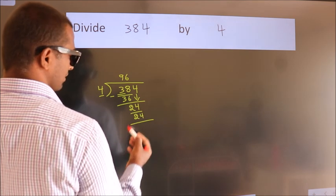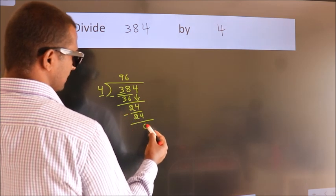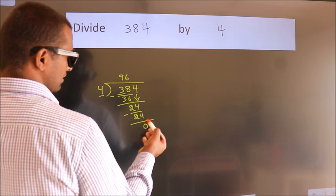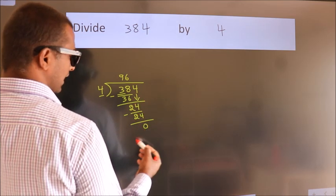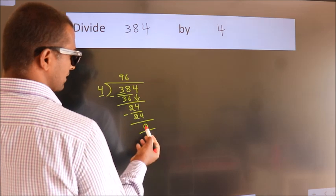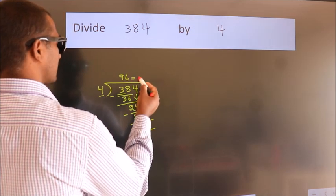Now, we subtract. We get 0. After this, no more numbers to bring it down. And we got remainder 0. So, this is our quotient.